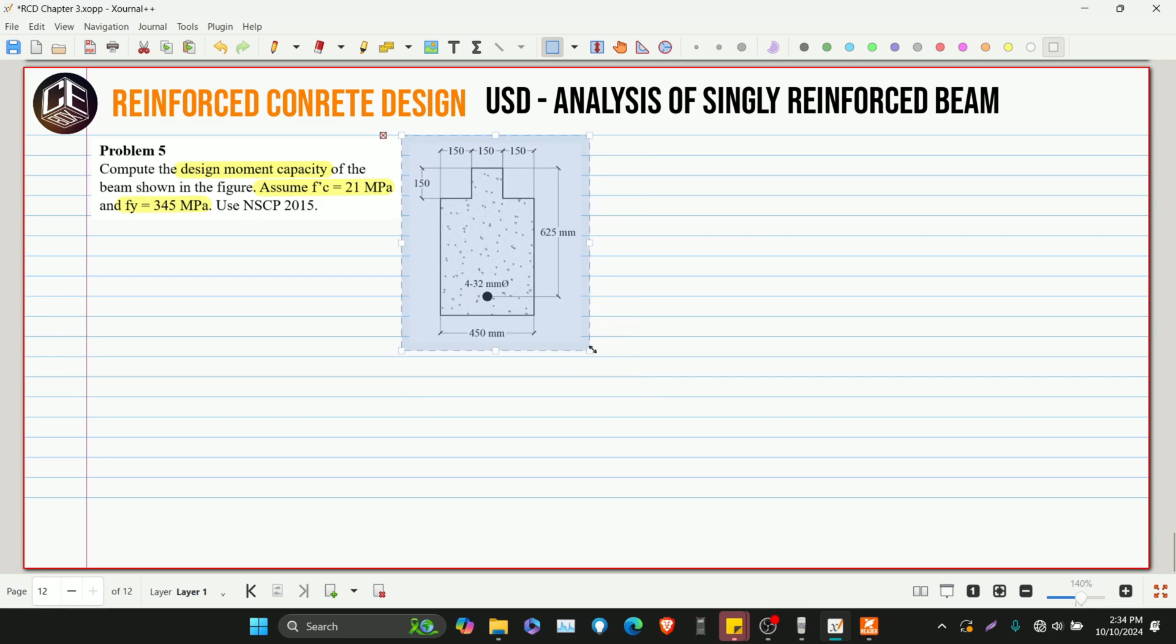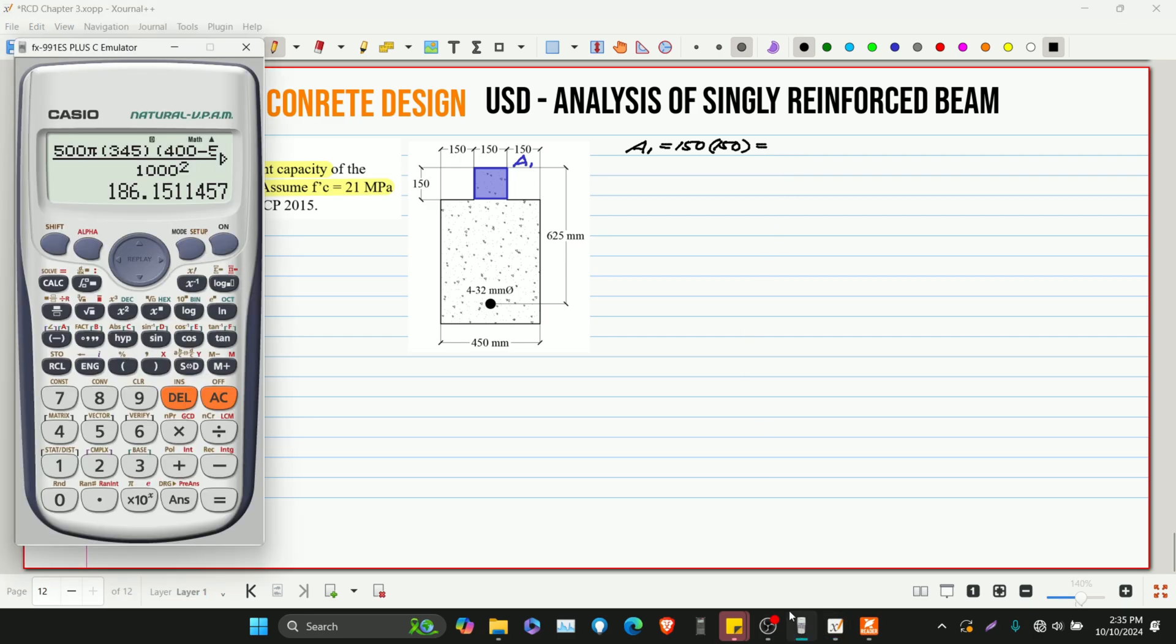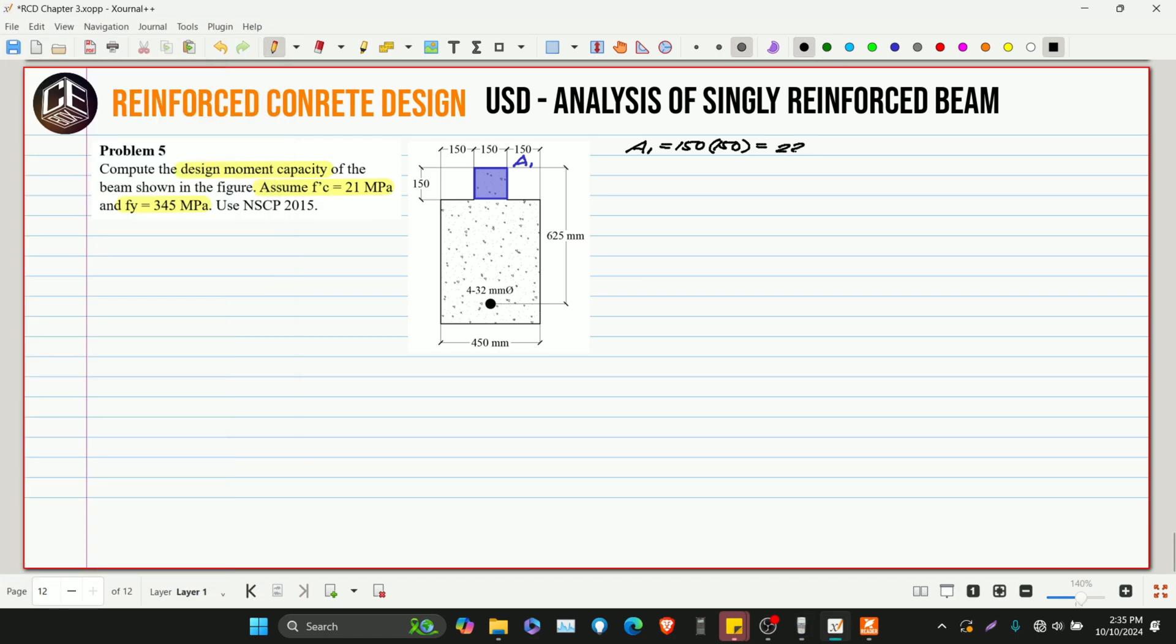So same approach in problem 5 as in problem 4. Let's solve for this area and denote it as area 1. Area 1 is equivalent to 150 multiplied by 150, so this is 22,500 mm squared.